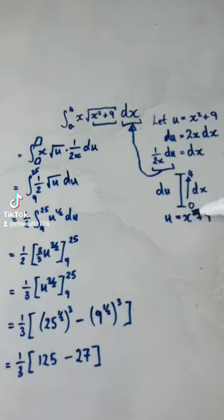So you put 0 into the x. 0 squared plus 9 would be 9. So in the du world, we are integrating from 9 to, now put the 4 into the x and then square it. 16 plus 9, that would be 25.